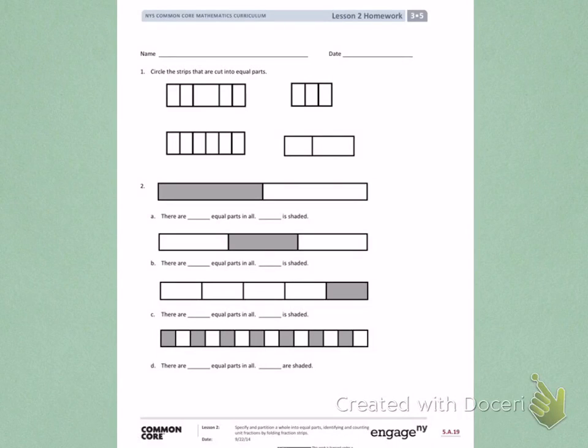This is Module 5, Lesson 2, Page 1. Today's objective was to specify and partition a whole into equal parts, identifying and counting unit fractions by folding fraction strips.